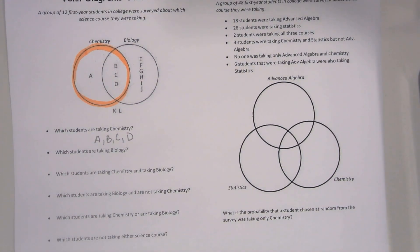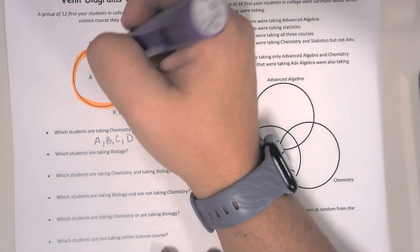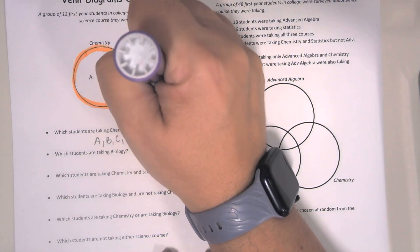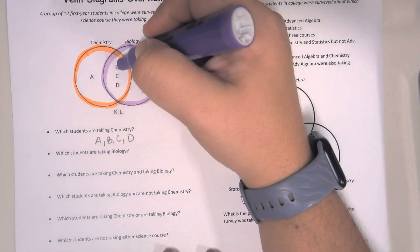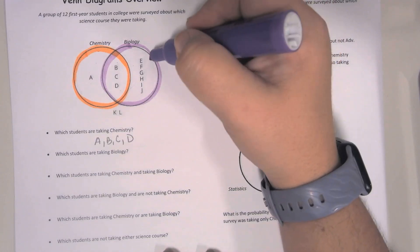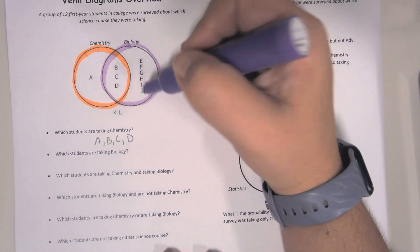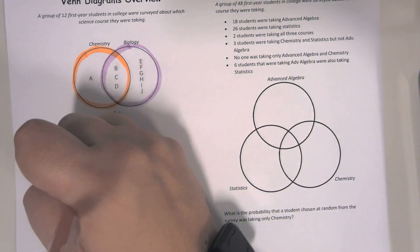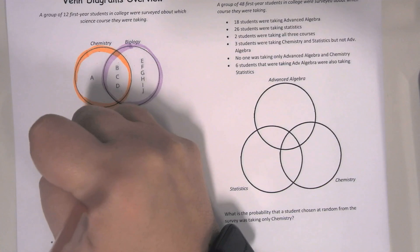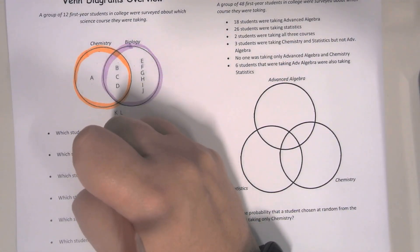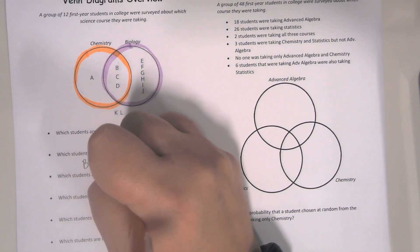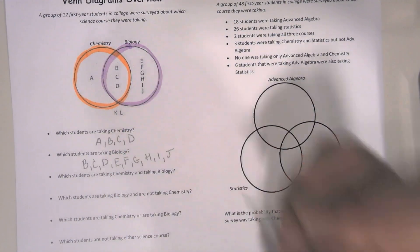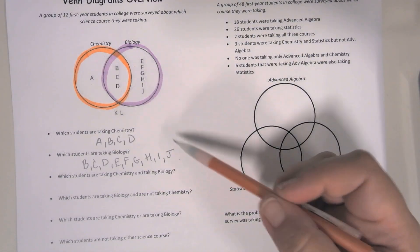Which students are taking biology will be anyone in this purple circle, which will be student B, C, D, E, F, G, H, I, and J. So a lot more students are taking biology than chemistry.